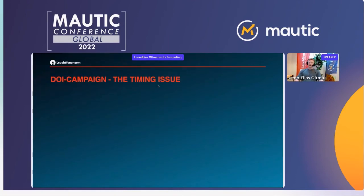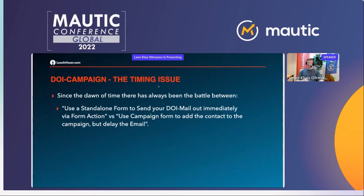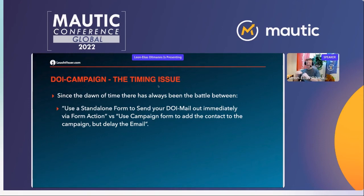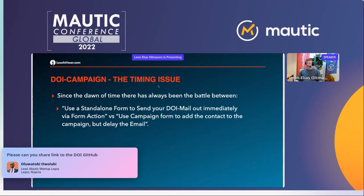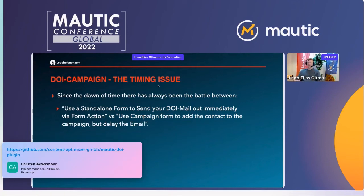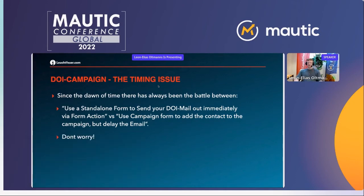There's been a timing issue since the dawn of time: the battle between using a standalone form — which sends the double opt-in mail immediately when the form is filled out — versus using a campaign form and adding the contact to the campaign, but then you have to wait for the campaign to send the email. Basically: send email immediately but can't add to campaign at the same time, or add to campaign but delay the email. Both options have a bad side — but we do have a solution.